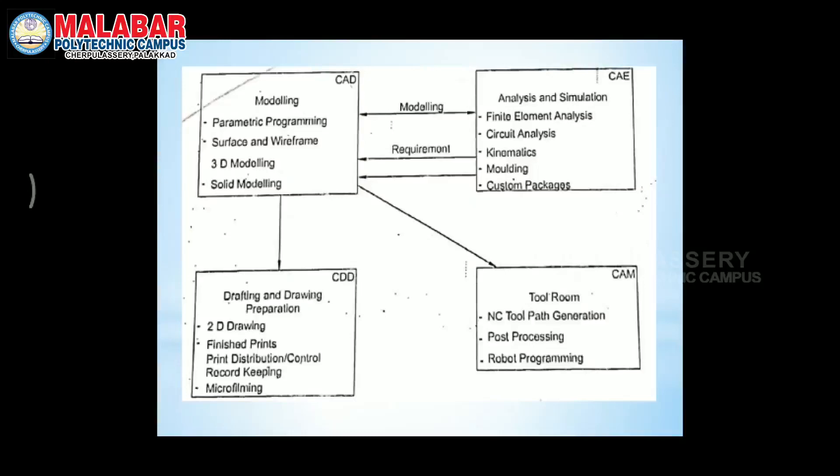Analysis and simulation involve product testing and prototype testing. The CAE module covers Finite Element Analysis, circuit analysis, kinematics, molding, and custom packages. For example, a machine element is analyzed under a load to determine stress and volume. When the analysis is completed, the model can be modified in the analysis window, and then translated into the CDD module.